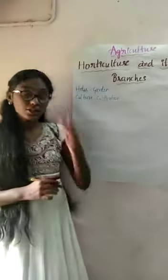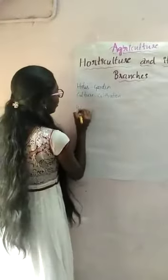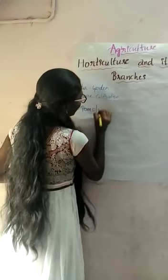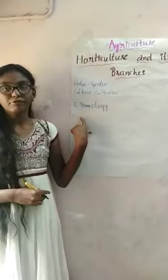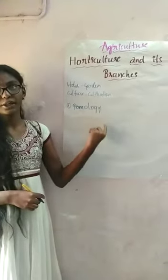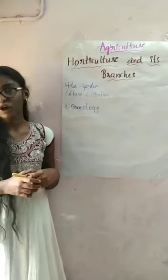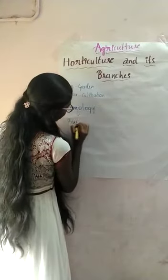In horticulture we have four branches. The first one is pomology. Pomology is derived from the Latin word — pomo means fruit, and logy means cultivation — which deals with the scientific study of fruit crops.